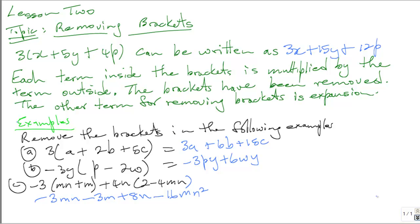We're going to collect like terms. Are there any like terms? No, there are no like terms there. So our final answer is negative 3mn minus 3m plus 8n minus 16mn square. Remember, we can only add and subtract like terms.